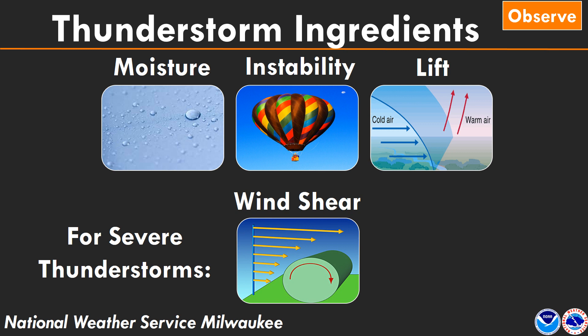The bonus ingredient we look at for severe thunderstorms and how storms become organized is called wind shear. We look at the winds from the bottom of the thunderstorm all the way through the top. When winds are either increasing or the direction is changing in a favorable way, you can get different types of thunderstorms that may produce different types of severe weather.